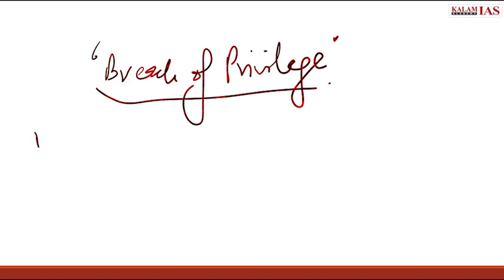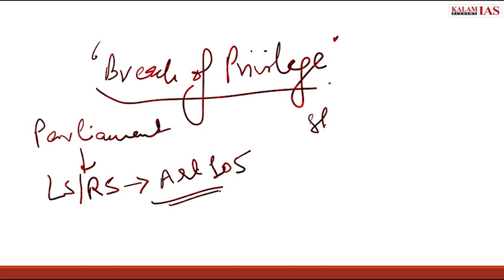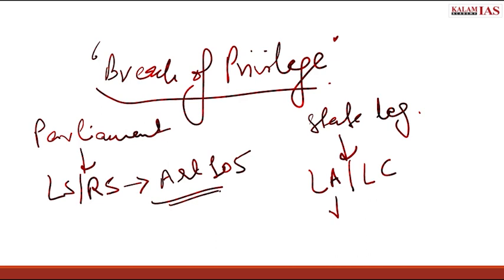Now, in the parliament, both houses — the Lok Sabha and the Rajya Sabha — draw their powers of immunity and rights of privileges from Article 105. And both houses of state legislature, the Legislative Assembly and the Legislative Council, draw their corresponding powers from Article 194.